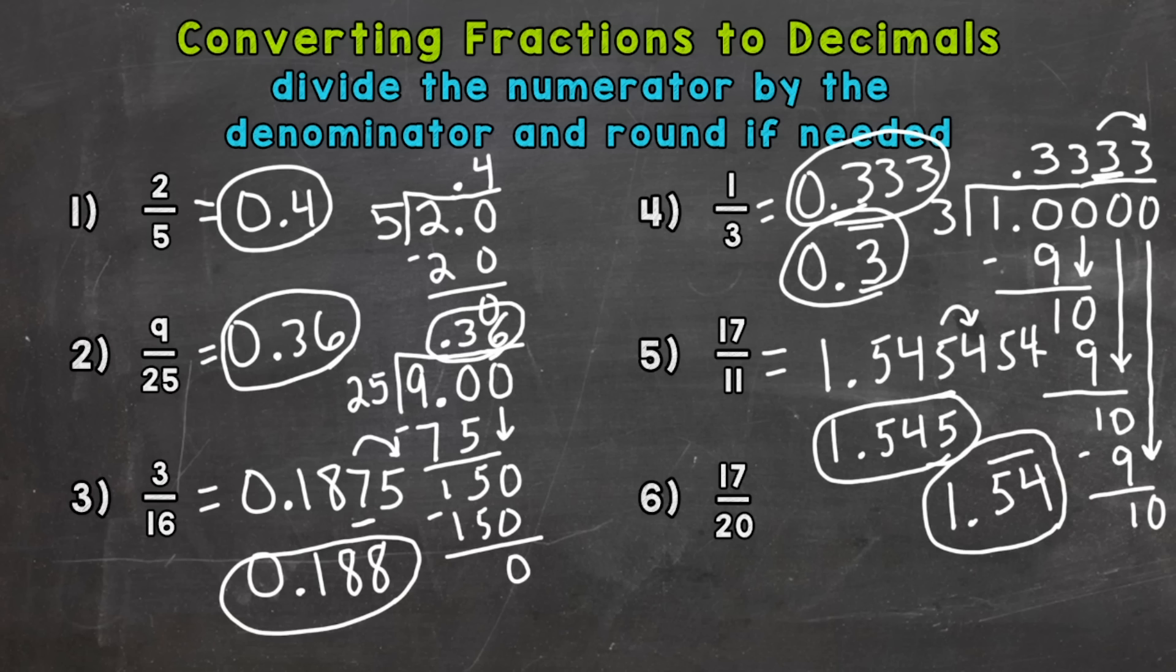Number 6, 17 over 20. So 17 divided by 20 is going to give us 85 hundredths. So it cuts off in the hundredths place. So no need to round. That one works out nicely.